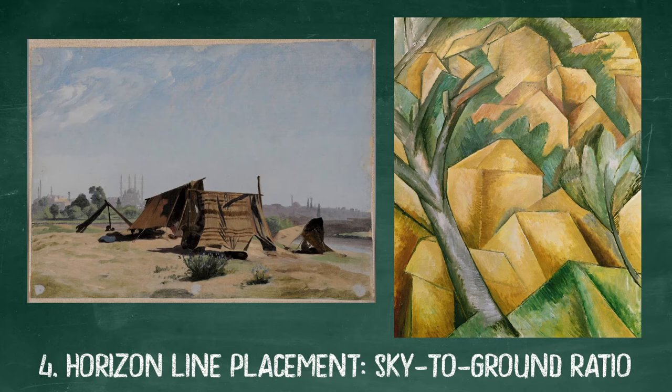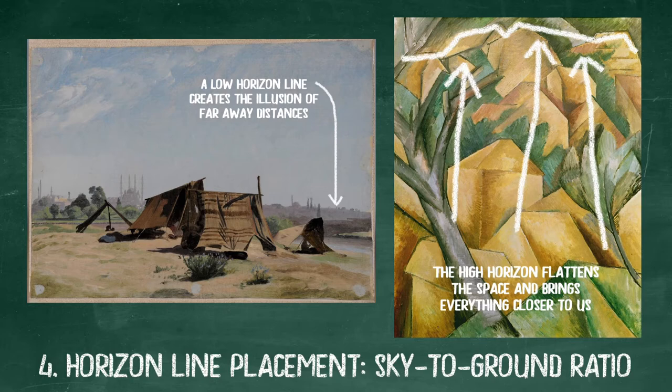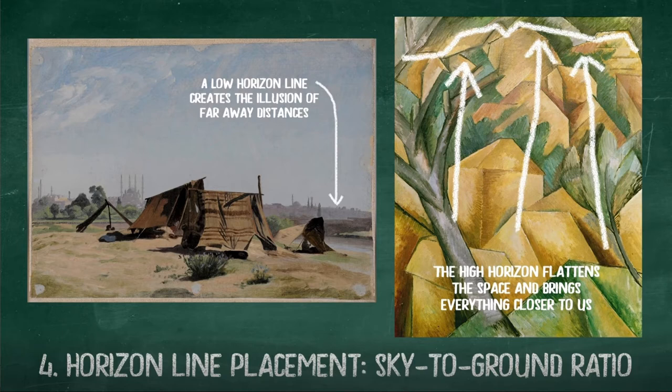The horizon line or ground line also plays a part. Look at these two paintings. Especially note the painting on the right where Braque has pushed the horizon line right to the top to make the houses fill the foreground. He reduces the pictorial depth to an absolute minimum.